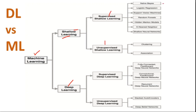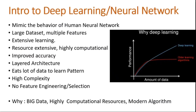Under shallow learning we have supervised learning — algorithms like Naive Bayes, logistic regression, linear regression, support vector machines, random forest, and KNN — and unsupervised learning like clustering and association, which is basically market basket analysis. In deep learning we also have supervised and unsupervised. In supervised deep learning we have ANN, CNN, and RNN, and in unsupervised we have autoencoders, transformers, and deep belief networks.